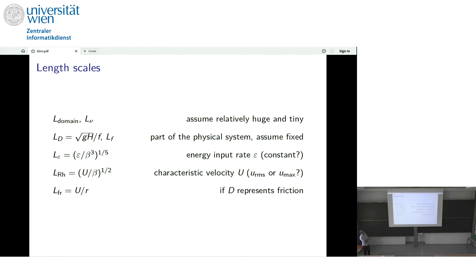So the domain scale is one obvious one. And we're going to assume it's big and doesn't play an effect. Similarly, the small-scale diffusion, molecular scale of molecular diffusion is often considered very small and ignored. There's the deformation radius. There's the scale of forcing.